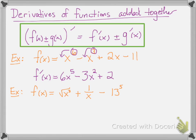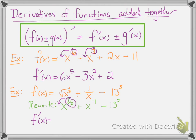Here's a more complicated example. F of x is square root of x cubed plus 1 over x minus 13 to the fifth power. You need to rewrite this function. Square root of x cubed is x to the 3-halves power. 1 over x is x to the negative 1 power. And 13 to the fifth you can just leave as 13 to the fifth. Now we have x to some powers, so we do know how to take derivatives.